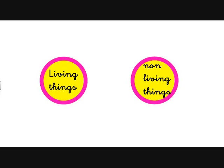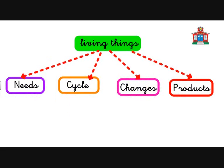Living things — what should that be? Living things have needs, they have a life cycle, they have changes, and they offer some products. Let's have a look at the first one: needs.